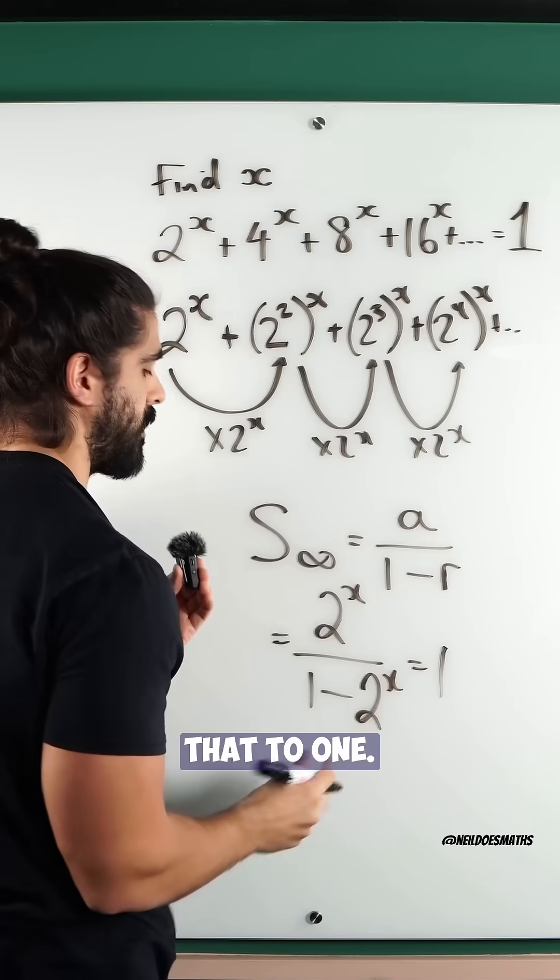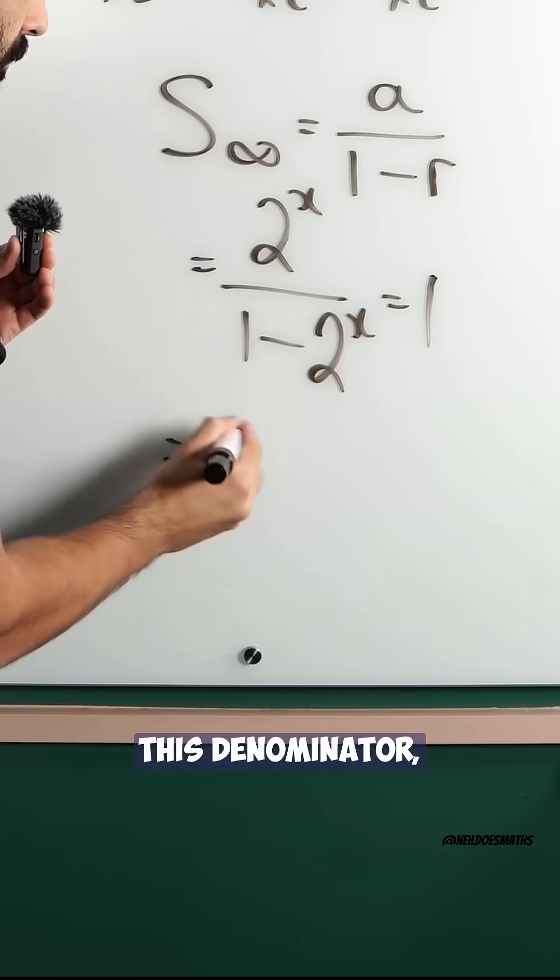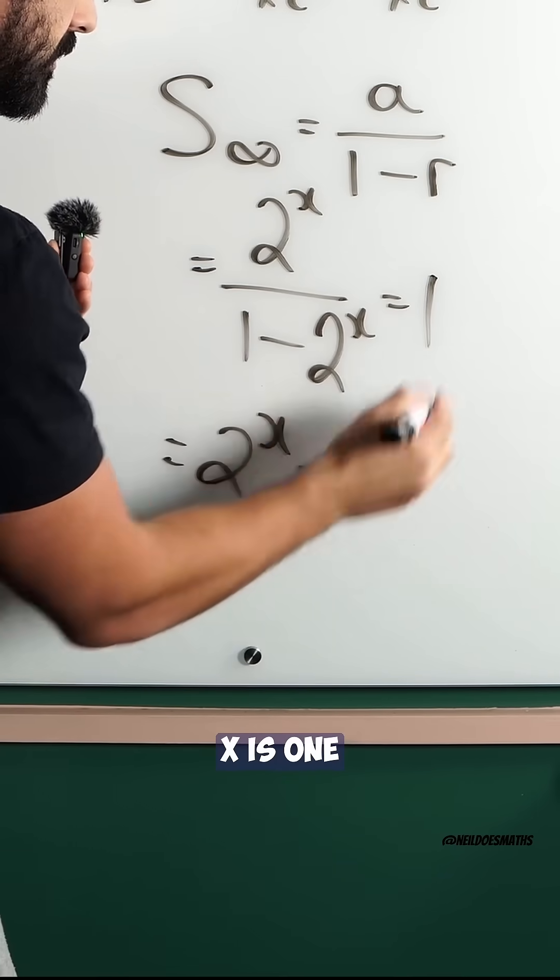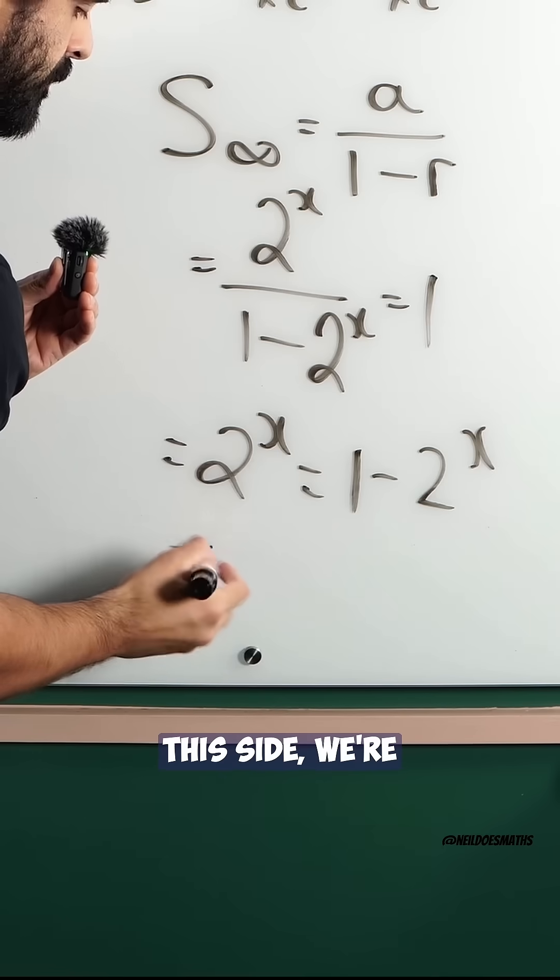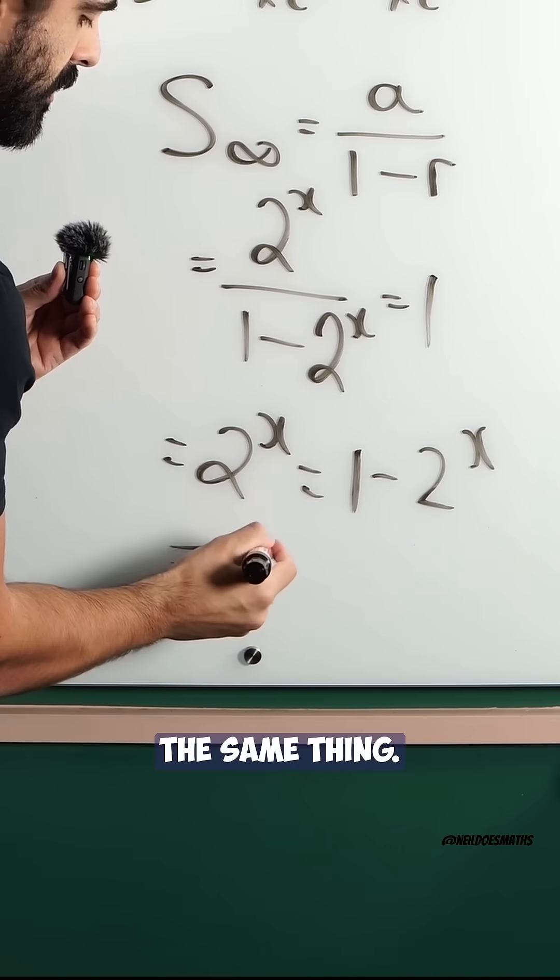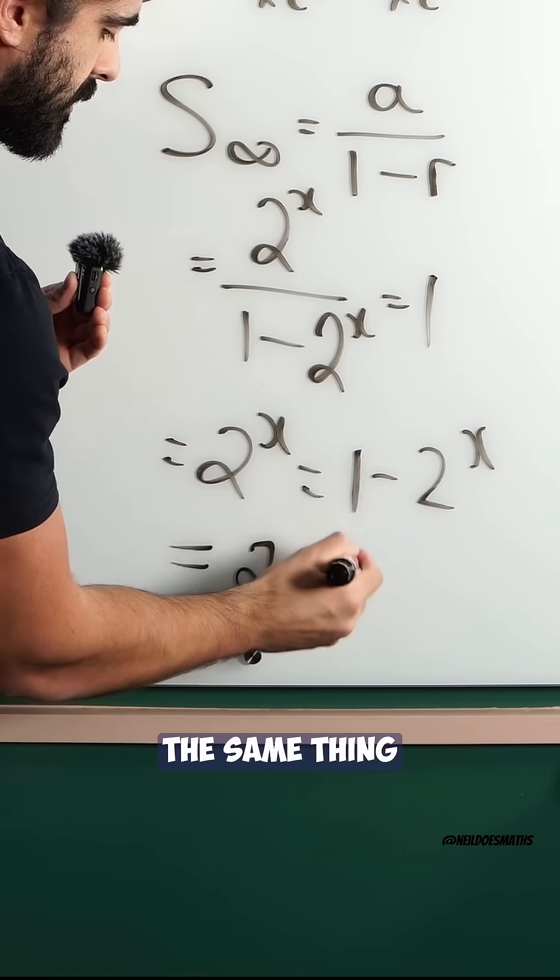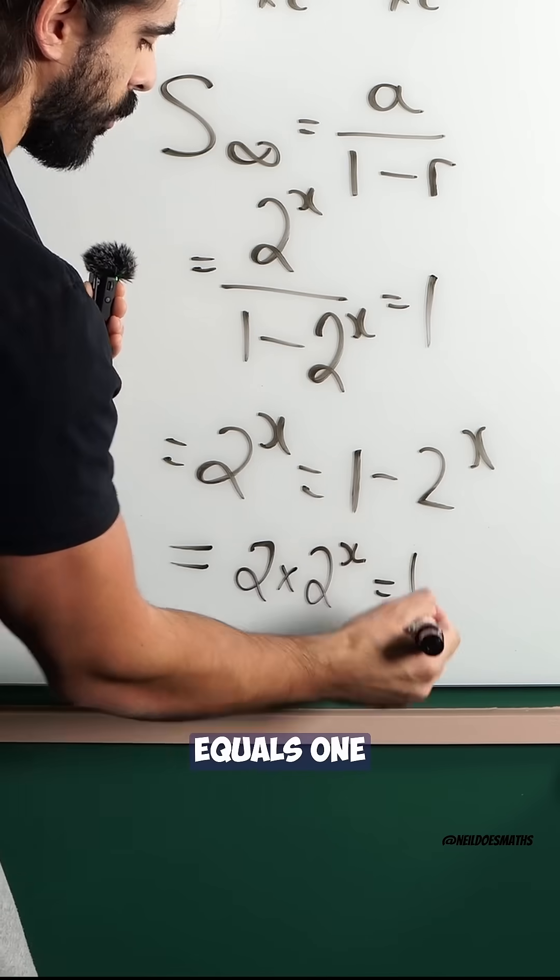We're equating that to 1. Multiply through by this denominator, we get 2 to the power of x is 1 minus 2 to the power of x. Move this to this side, and we have 2 lots of 2 to the power of x equals 1.